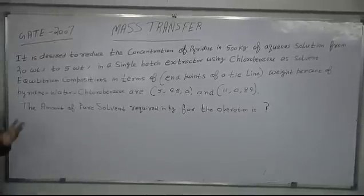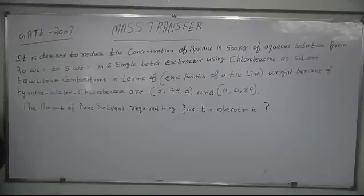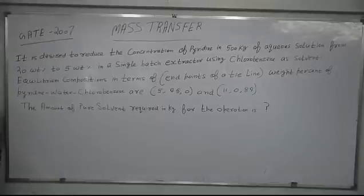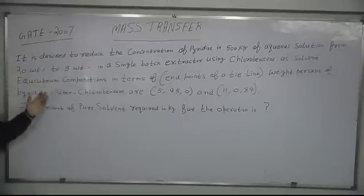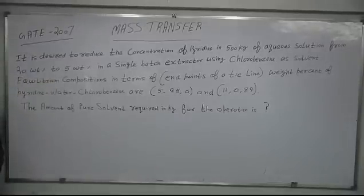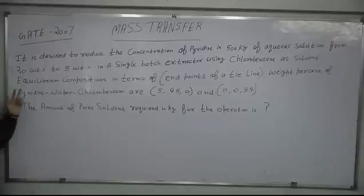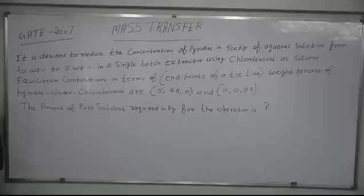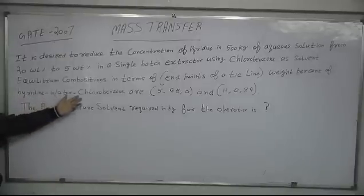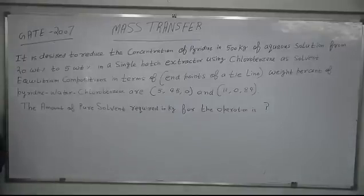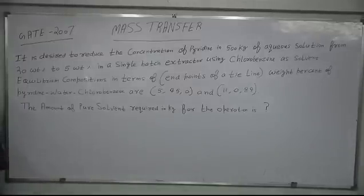Good morning. Today we are going to be discussing another problem in mass transfer — Gate 2007 extraction. It is written on the board. It is desired to reduce the concentration of pyridine in 500 kg of aqueous solution from 20 weight percent to 5 weight percent in a single batch extractor using chlorobenzene as a solvent. Equilibrium compositions in terms of end points of a tie line — weight percent of pyridine, water, chlorobenzene — are given as 5, 95, 0 and 11, 0, 89. Calculate the amount of pure solvent required in kg for the operation.